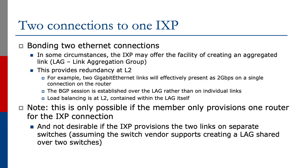The other thing we could do is bond the two ethernet connections together. In some circumstances, the IXP may offer the facility of creating an aggregated link — called a LAG, a link aggregation group. This provides redundancy at layer 2. For example, two gigabit ethernet links will effectively present as 2 gigabits per second on a single connection on the router. The BGP session is established over the LAG rather than on individual links, and load balancing is at layer 2 contained within the LAG itself.